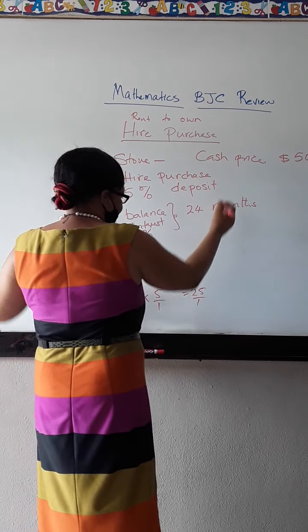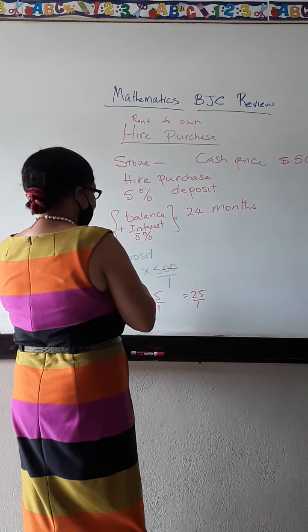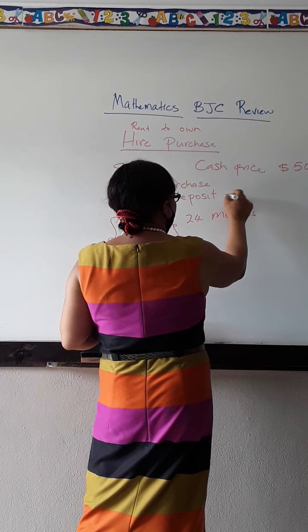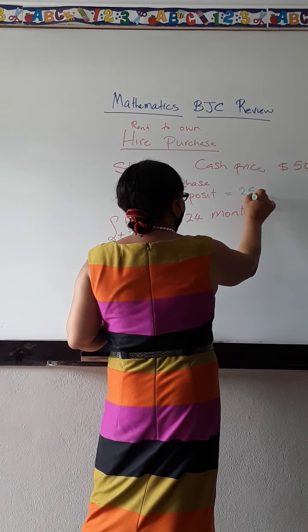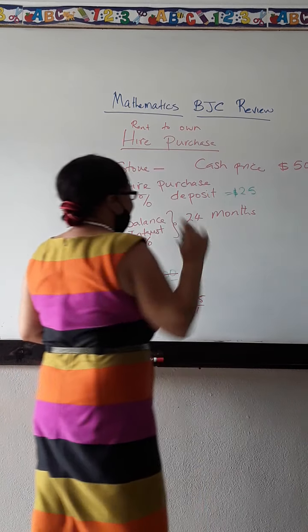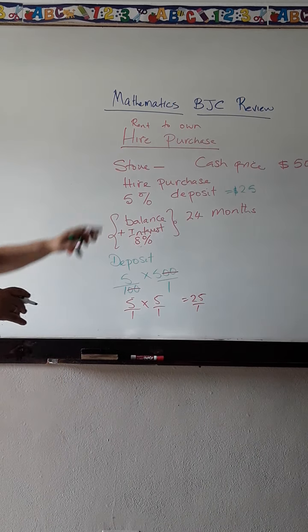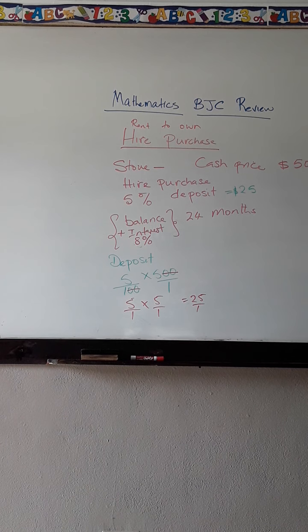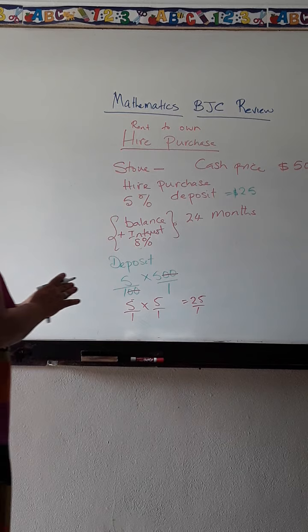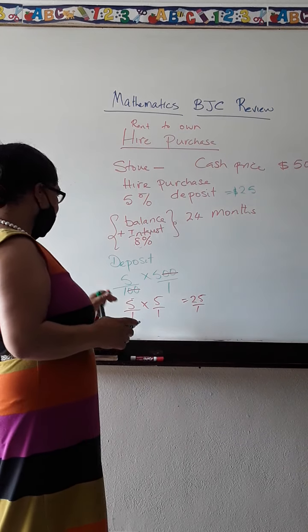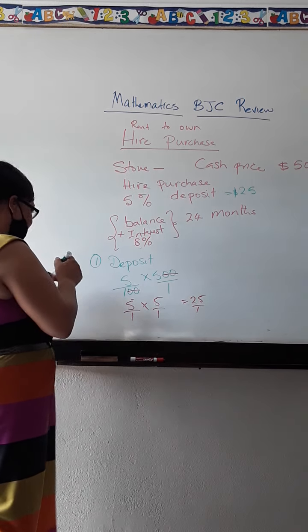So my deposit, I'll just work that out. My deposit is going to be equal to $25. That's 5% of that $500. I will only have to pay $25 for my deposit. So that's step 1. I have to work out my deposit.